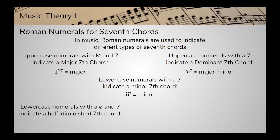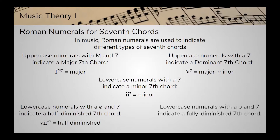Lowercase numerals with a circle with a half slash through it and a seven indicate a half diminished seventh chord, just like the chord symbols we've talked about before. And finally, lowercase numerals with a full circle — without the slash — and a seven indicate a fully diminished seventh chord. So these are the symbols we're going to be using to identify different seventh chords.